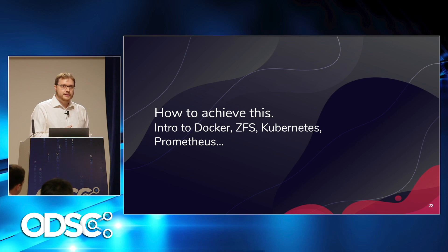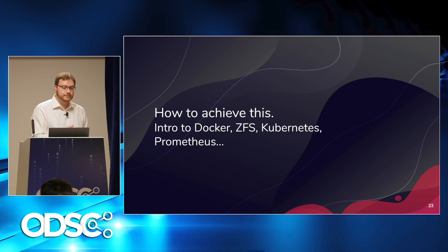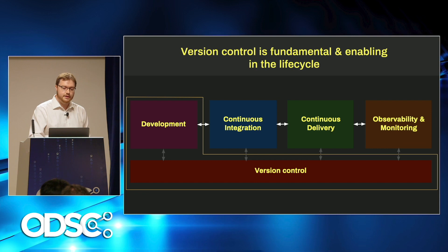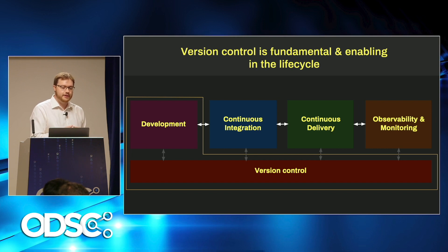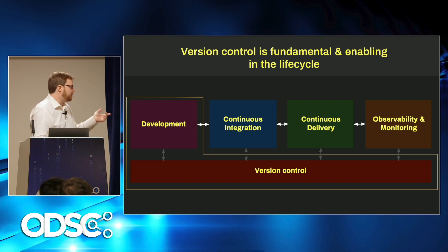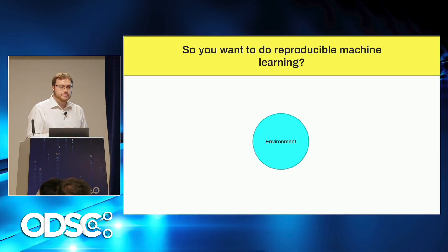In this last section I'm going to describe how you can build something that does this. There are some key open source components we've used in our platform that I can recommend: Docker, ZFS, Kubernetes, and Prometheus are just some of the pieces. There's a lifecycle we're trying to get through here — from development into continuous integration, into continuous delivery, and then observability and monitoring while the models are running in production. The key point is that version control is fundamental and enabling to keeping track of everything. If you want to do reproducible machine learning, you need to keep track of the environment, the code and notebooks, and the data.